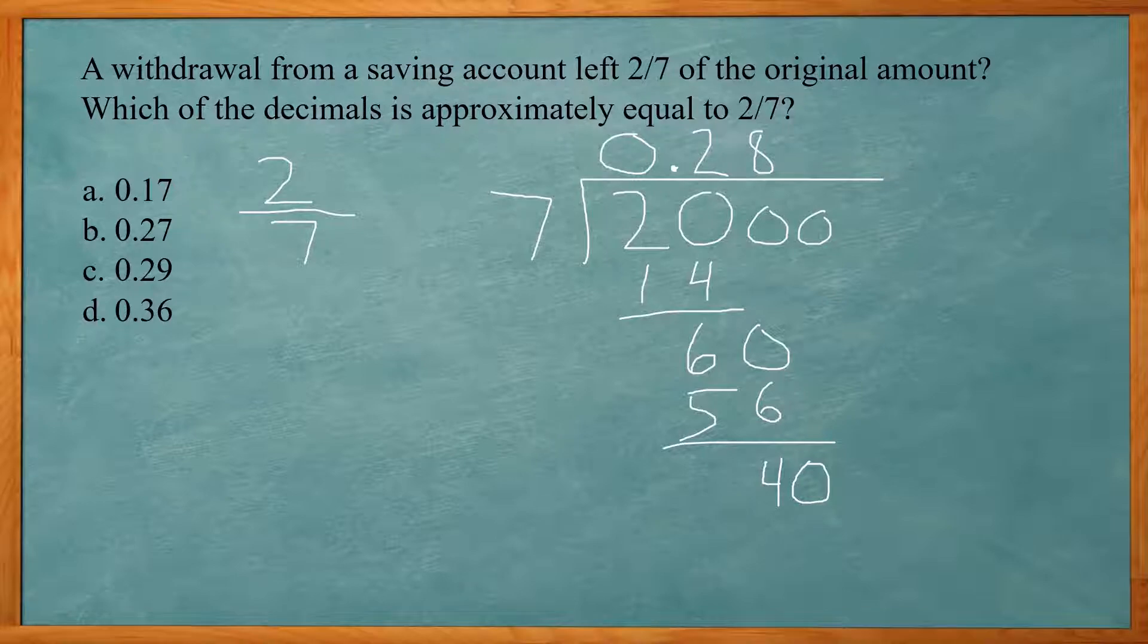And I'm just going to do one more. Bring the zero down. How many times is seven going to 40. So I'm going to go with five to give us 35. So now I'm going to stop. I got 0.285.